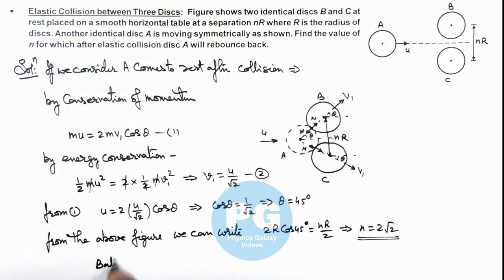So here we can write, ball A will rebound back if n is equal to or n is less than 2 root 2. So that will be the final result of this problem.